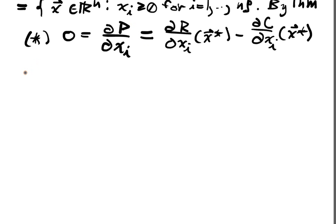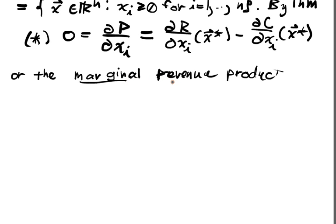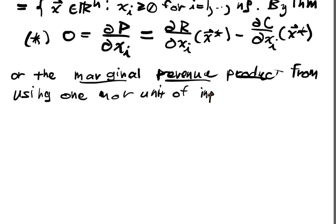Of course, when we unfold what this means, we interpret this in the economic way as saying the marginal revenue, or the marginal product or revenue product from using one more unit of input i must balance the marginal cost.